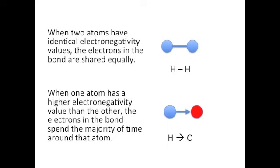However, when one atom has a higher electronegativity value than the other, then the electrons in that bond spend the majority of time around the atom with the higher electronegativity.